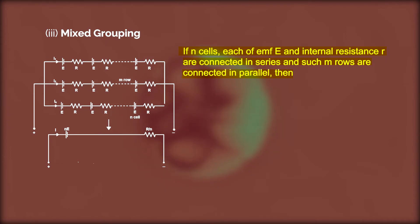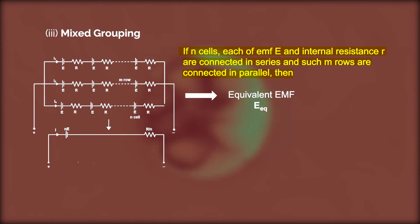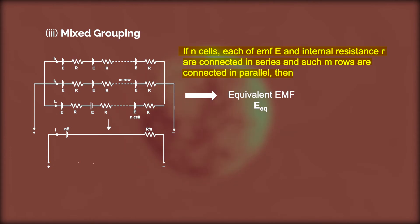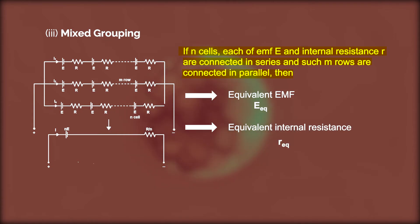Now, what is the equivalent EMF and equivalent internal resistance for mixed grouping? For one row, the total EMF: since there are N cells in one row, the total EMF = NE. For the equivalent resistance, in one series row the total resistance = Nr.